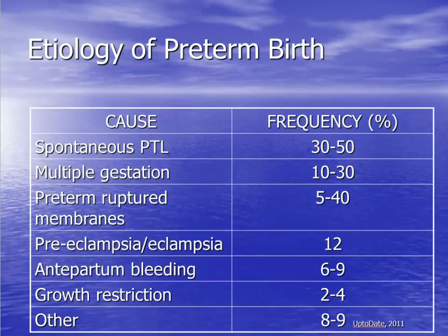The most common causes of preterm birth are listed in this table. Notice that preterm birth sometimes occurs iatrogenically. Babies are sometimes delivered early on purpose because of other pregnancy complications such as severe preeclampsia or poor fetal growth.